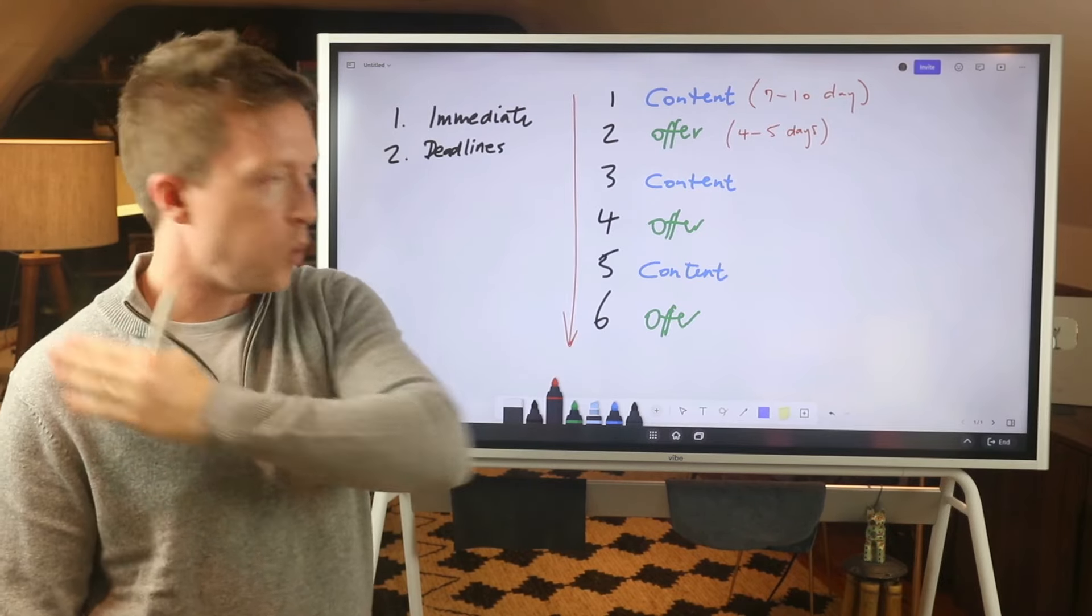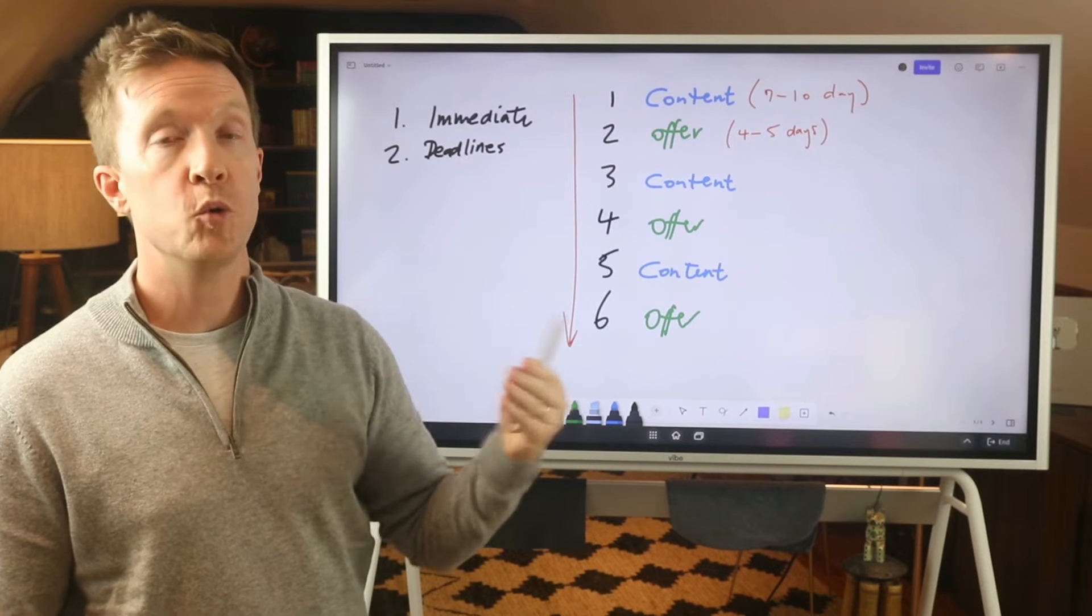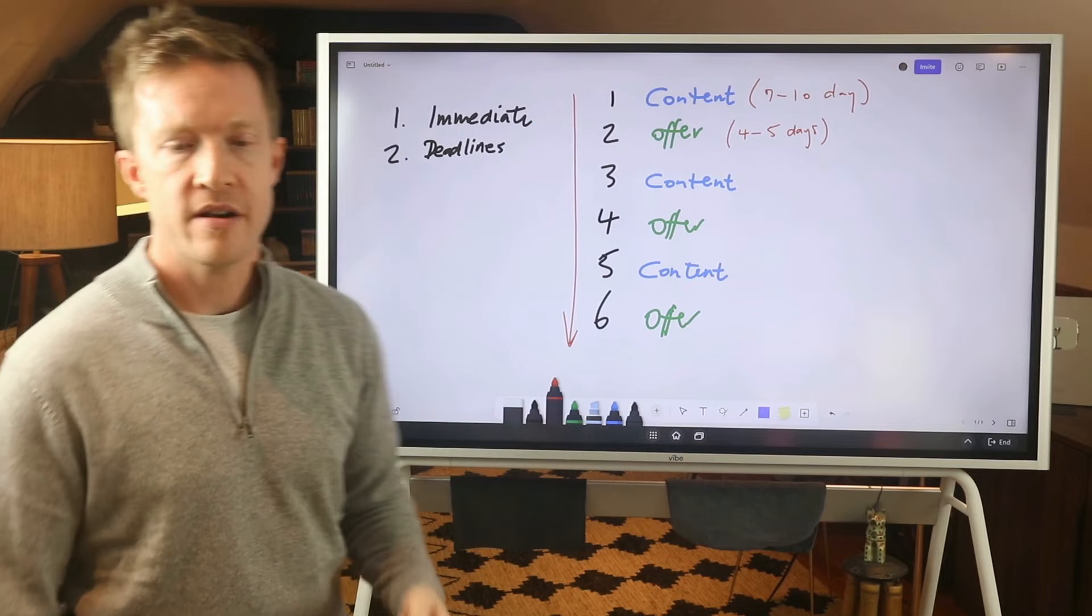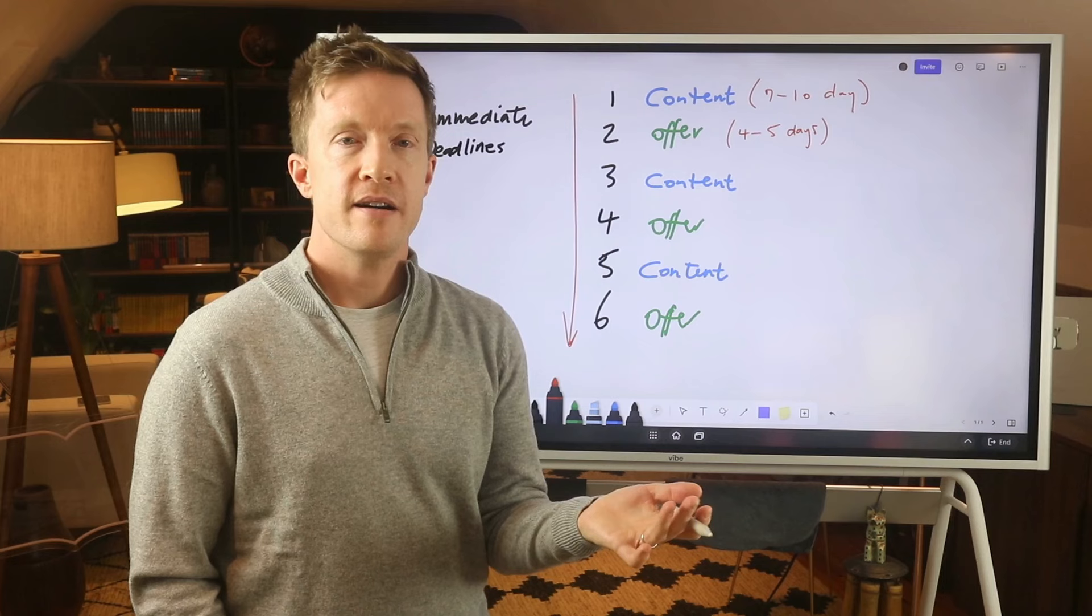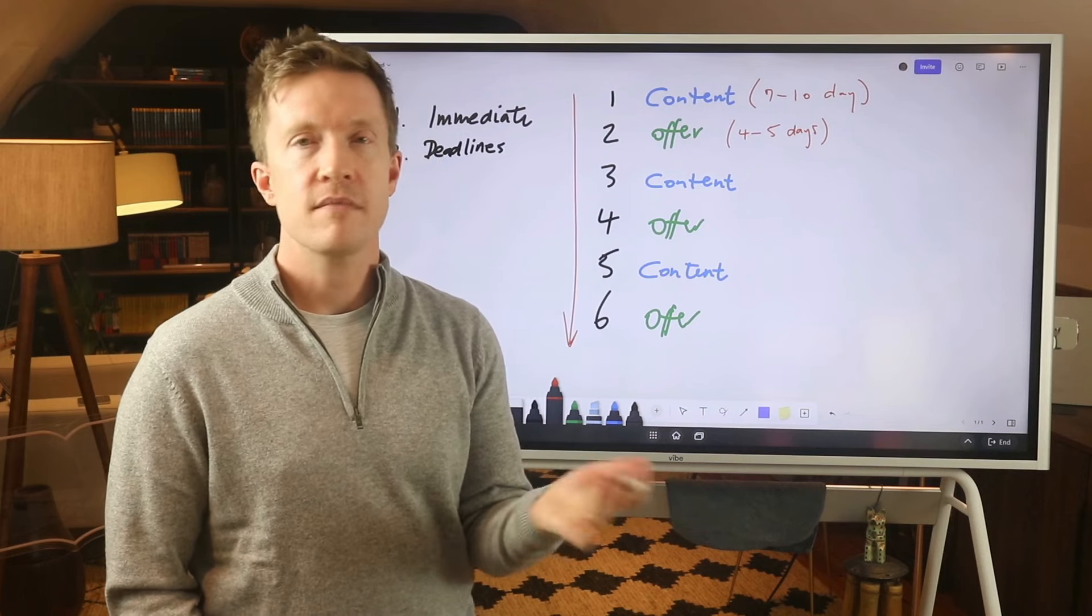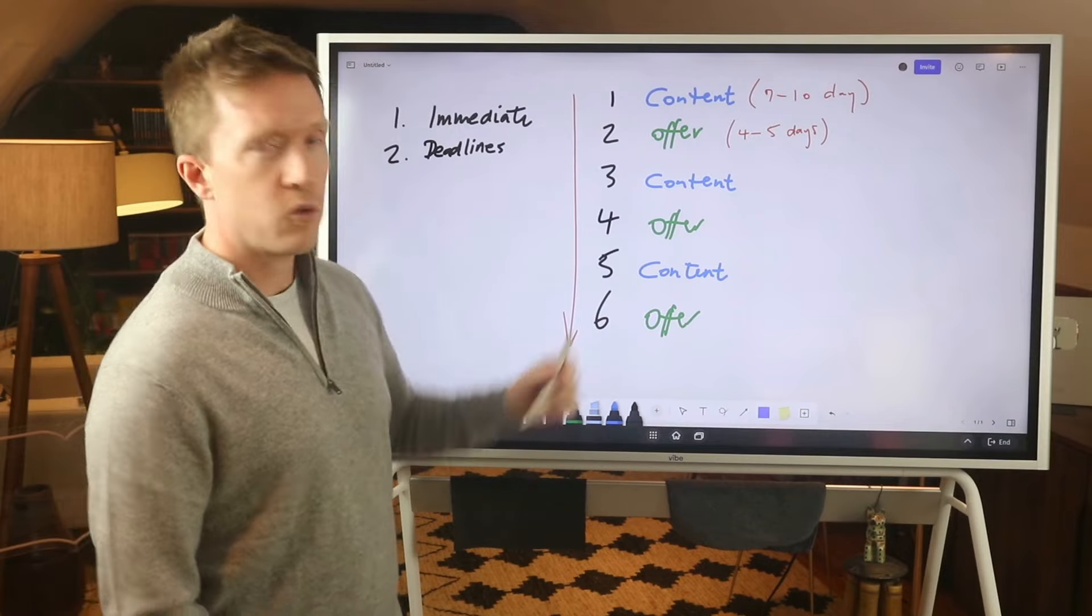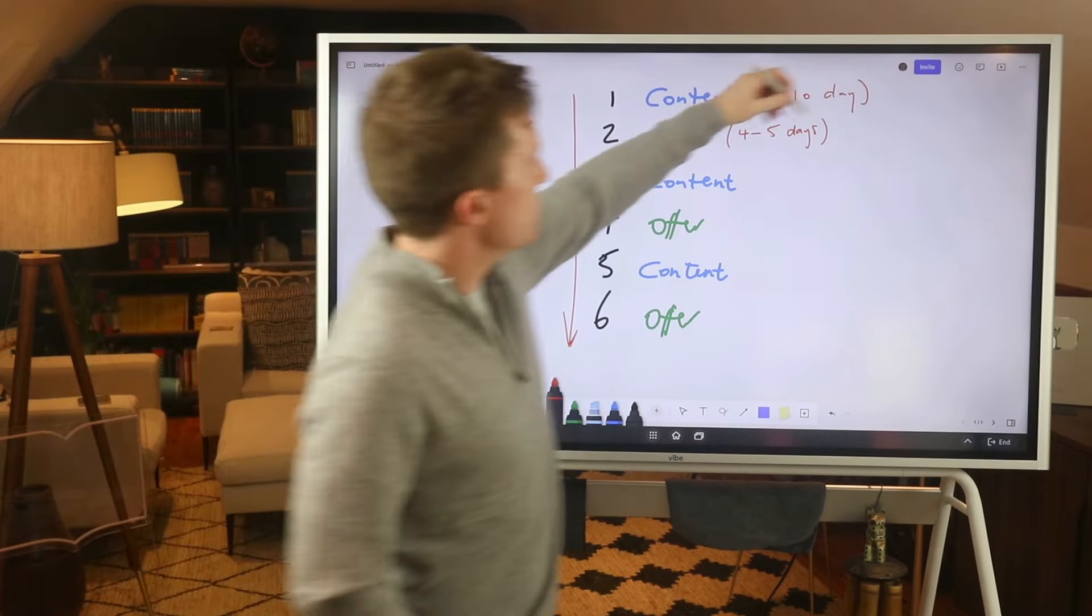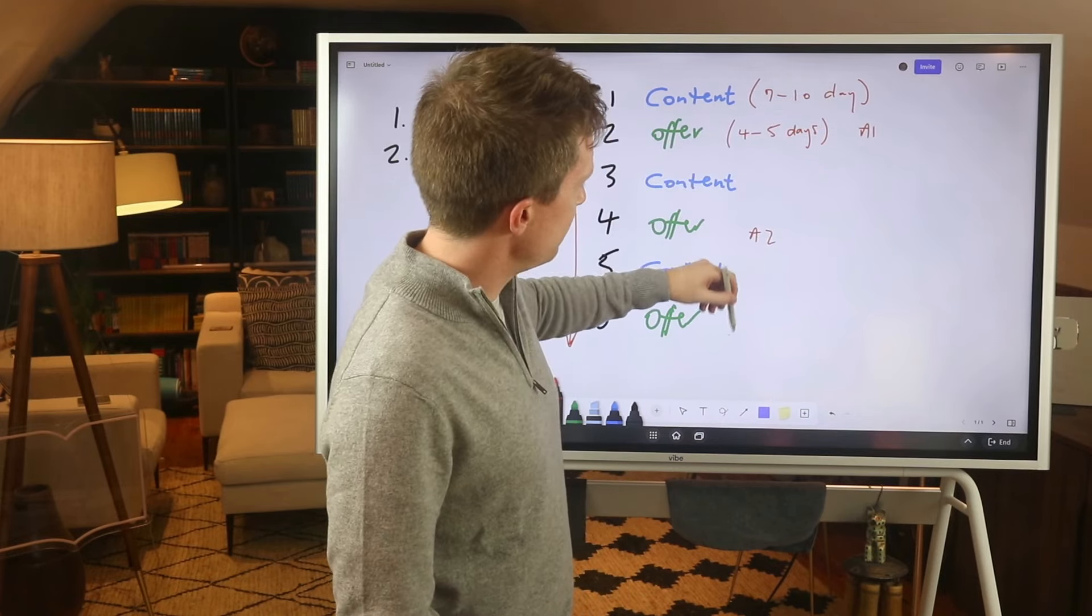So this might be seven to ten days of content followed by an offer. And so we will alternate between content and offer. And typically the offer is a bit shorter, three, four to five days. It's a very straightforward offer with a deadline and it just carries on like this.